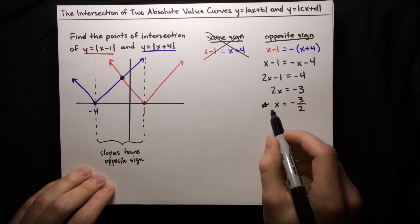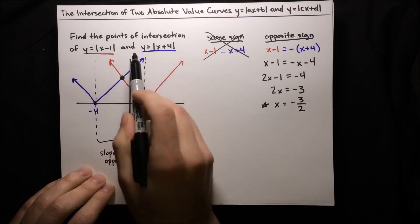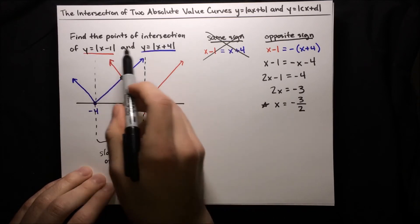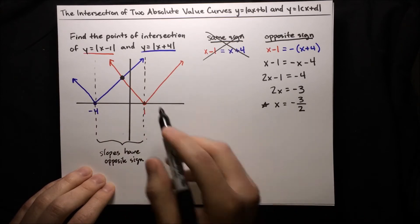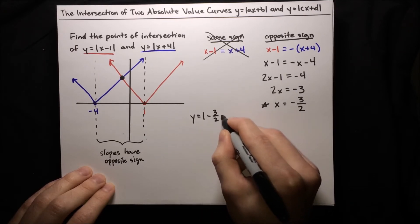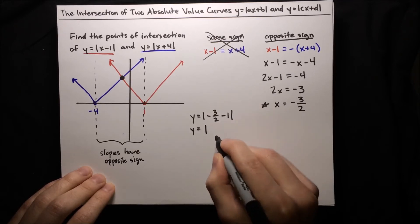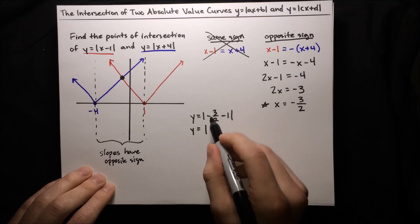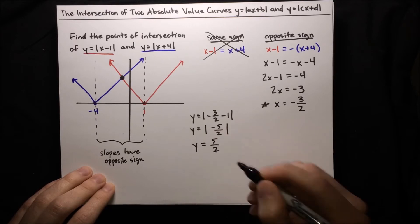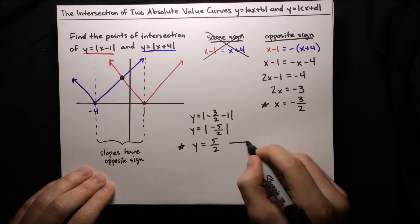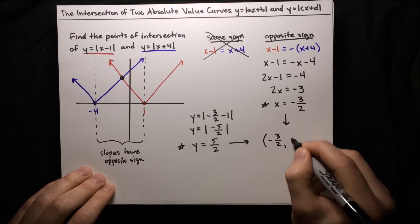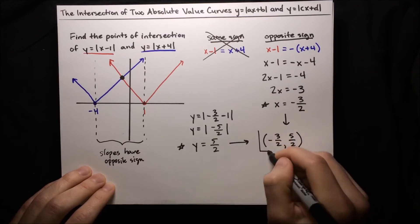I'm going to star that because it's important. The only thing we need now is y — we want the point of intersection, which consists of the x value and the y value. So we can plug that x into one of the two equations. Plugging into the first one, y equals absolute value of negative 3 halves minus 1. Since 1 is 2 over 2, that's negative 3 minus 2 over 2, which is negative 5 over 2. The absolute value of that removes the negative sign, so y equals 5 over 2. Our point of intersection is negative 3 halves, 5 halves.